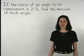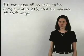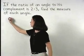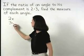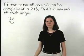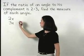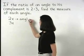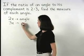When the ratio of two angles is 2 to 3, we can represent the angles as 2x and 3x. So let's call 2x our original angle and 3x its complement.